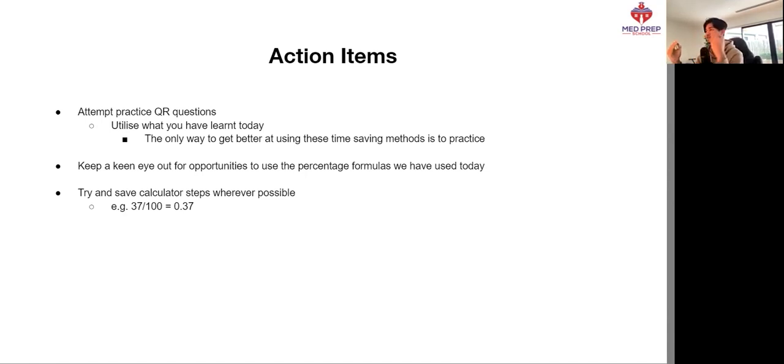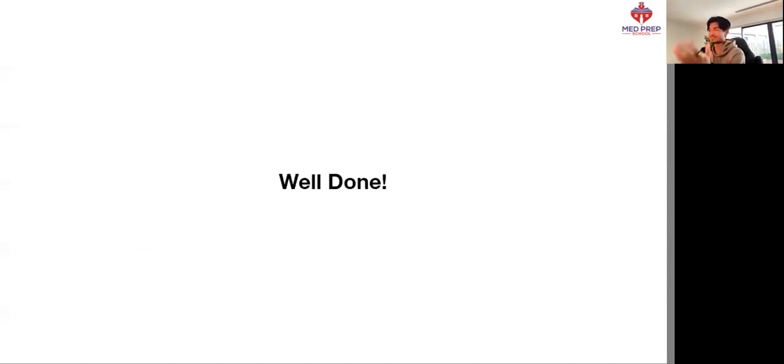The only way to get better at using these time-saving efficiency methods is to practice utilizing them. Because, again, you guys saw exactly how fast I could make these happen. That is your goal as well. So, keep a keen eye out for these opportunities to use the percentage formulas we have used today. And also, just remember, try and save calculator steps wherever possible. For example, 37 over 100 is going to be 0.37. So, instead of making it a two-step like x times 37 over 100, you could just do x times 0.37. Other than that, this has been a longer class. Well done for making it through it. And that has been percentages for quantitative reasoning.